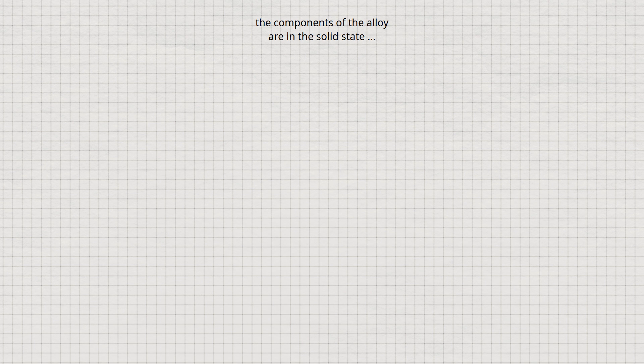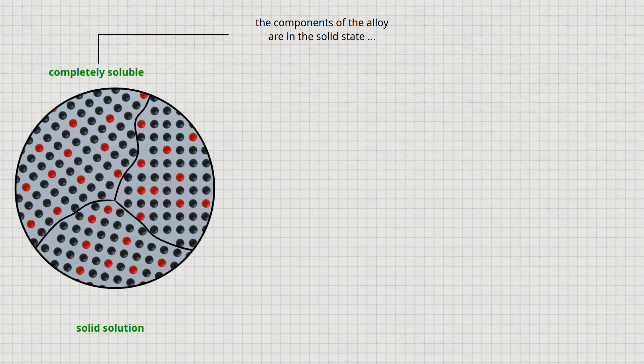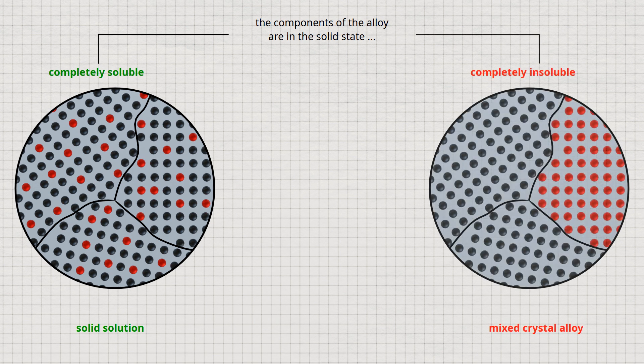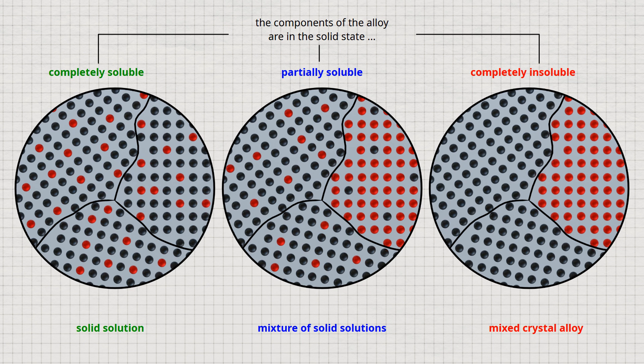To summarize the three types of alloys: If the components are completely soluble in each other in the solid state, it is called a solid solution alloy, with atoms homogeneously distributed throughout the grains. If the components are completely insoluble, it is called a mixed crystal alloy, where each component forms its own crystals with atoms that do not mix, resulting in an inhomogeneous microstructure. If the components are only partially soluble, the microstructure is a mixture of different solid solutions — the alpha-solid solution consists mainly of the base material, while the beta-solid solution consists mainly of the alloying element atoms, which may in turn contain atoms of the base material.